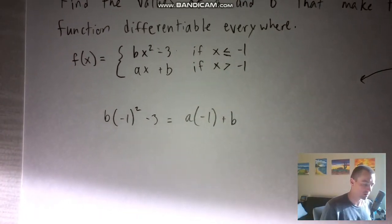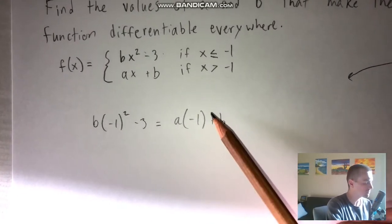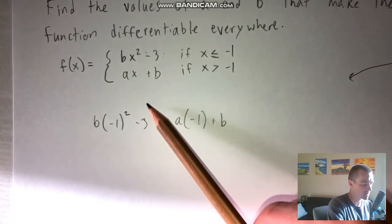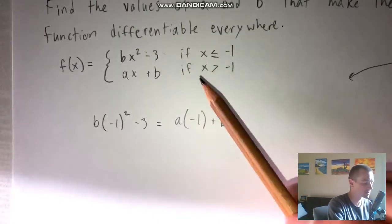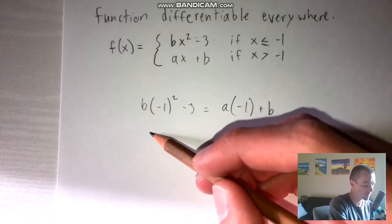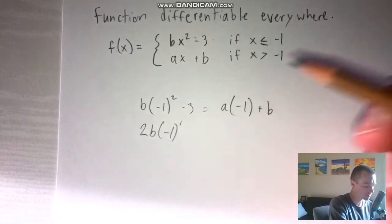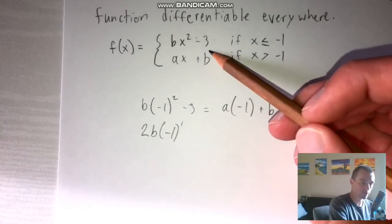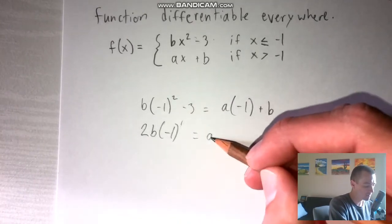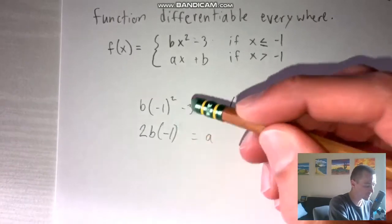We also need to make sure that the derivatives of each piece are equal at x equals negative one, because that's our other condition. This first equation guarantees continuity at x equals negative one, but we also need to ensure differentiability there. So we take the derivatives of each piece and plug in x equals negative one, setting those equal to make sure they have the same slope. The derivative of bx squared minus three, using the power rule, is 2b times x, so plugging in negative one gives negative 2b. The derivative of ax plus b is just a. So our second equation is negative 2b equals a.